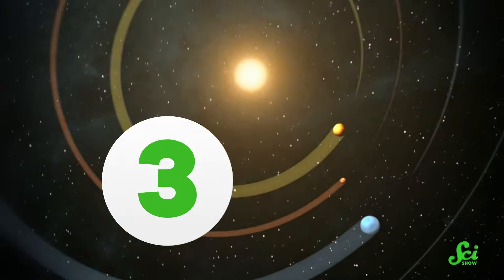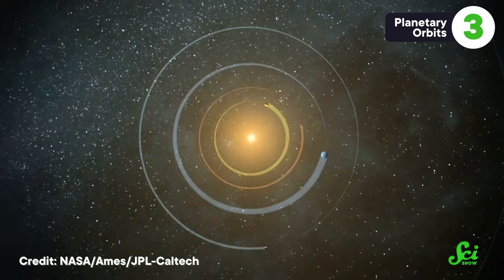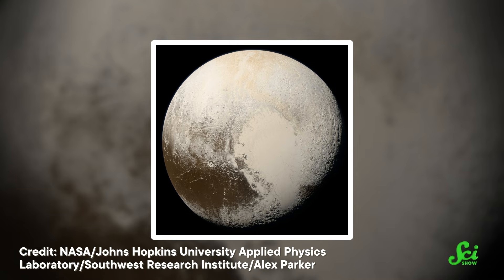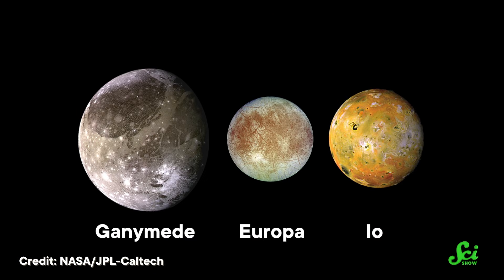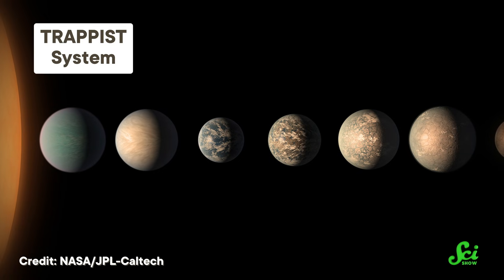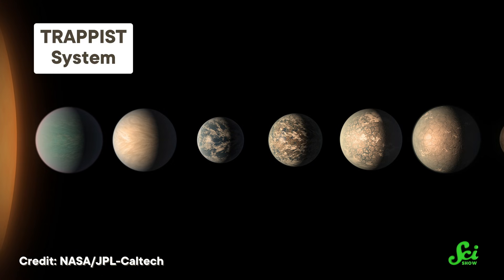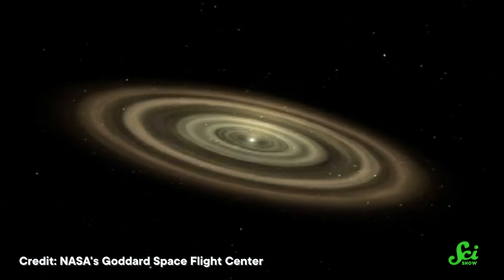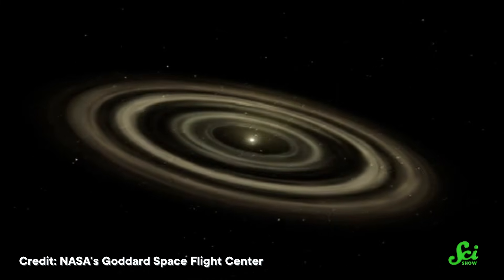If you zoom in on a spiral galaxy and look at a single star system, chances are you'll find even more objects moving in sync. Here in our solar system, Pluto makes two orbits for every three orbits of Neptune. Every time Jupiter's moon Ganymede makes one orbit, Europa makes exactly two, while Io makes four. Whole groups of asteroids have orbital periods perfectly synced with Jupiter's. And around the galaxy, some planetary systems are even more synchronized. The TRAPPIST system has at least seven planets whose orbital periods are nearly whole-number ratios of each other.